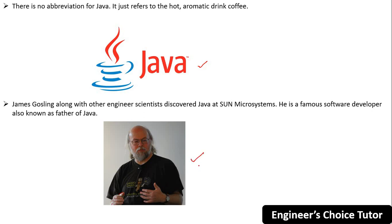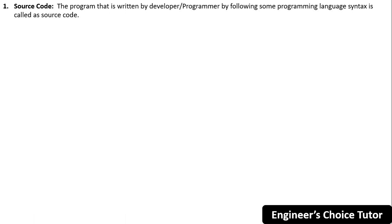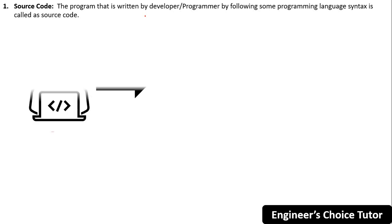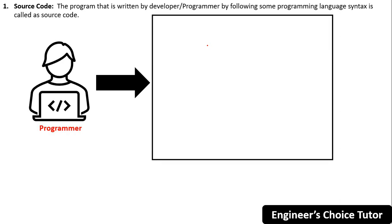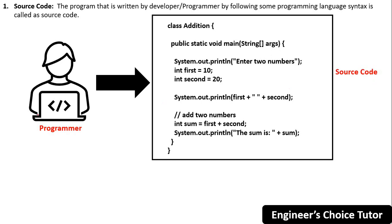Before starting any programming language, you should know the basic terminologies used in programming languages — like what is source code, compiled code, execution, compilation, executable code, interpreter, and compiler. A program that is written by a developer or programmer by following some programming language syntax is called source code. For example, an addition program written in Java — that code is called source code.